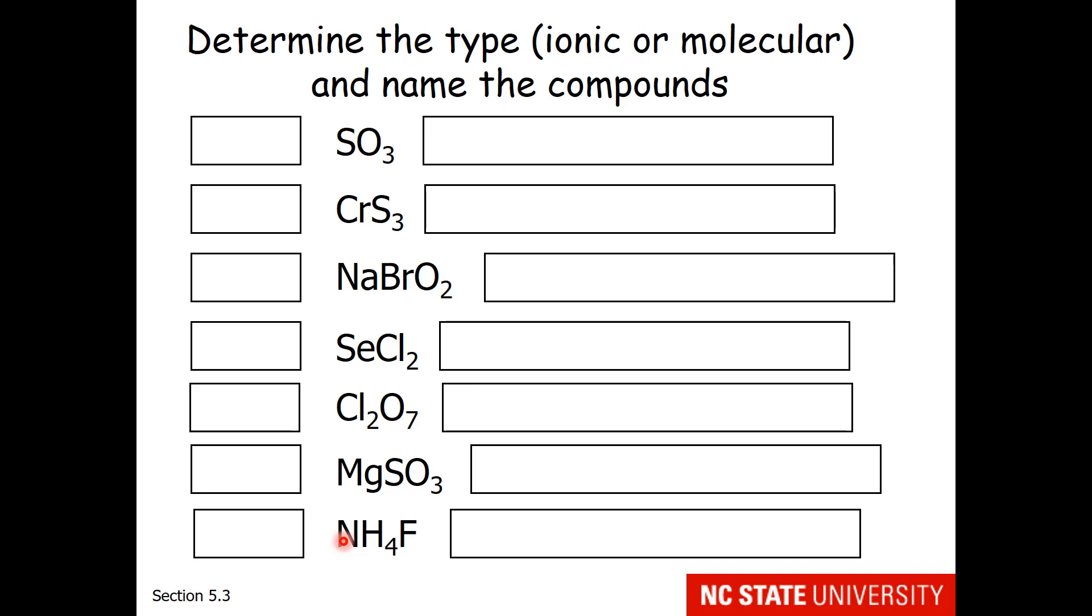So this is an exercise I typically do in person in class. It turns out that recalling information is the most effective way to learn something. So I'm going to put in some pauses to give you time to recall the information. Let's start with SO3. Sulfur is a nonmetal. Oxygen is a nonmetal. Therefore this compound is molecular. So how would you name it? I am hoping you come up with sulfur trioxide.